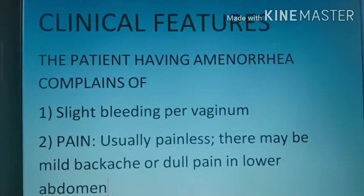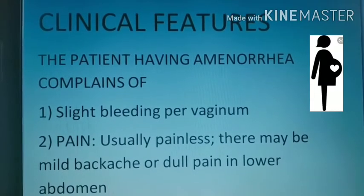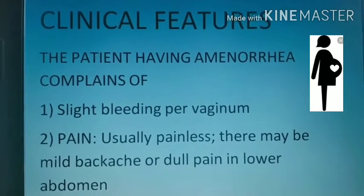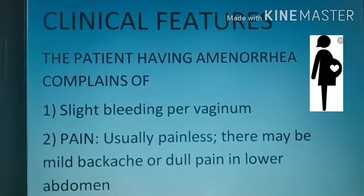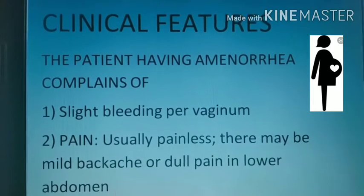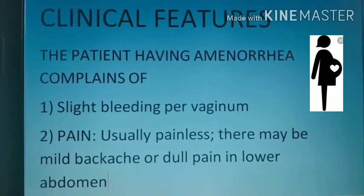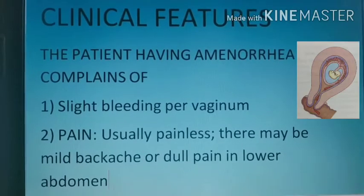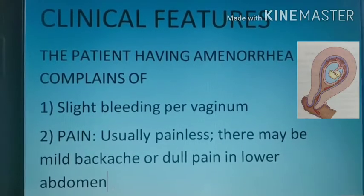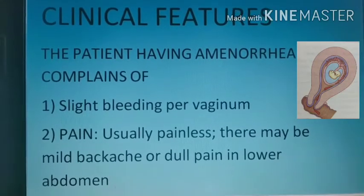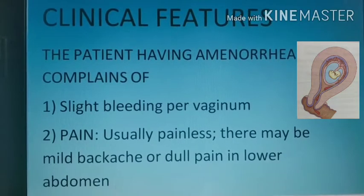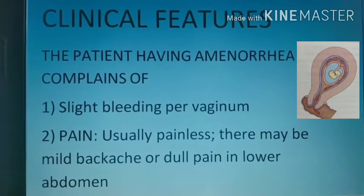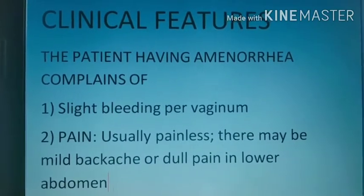Next is clinical features. A patient having amenorrhea — that is, a lady showing symptoms suggestive of pregnancy — in threatened miscarriage will show the following signs and symptoms. The first one is slight bleeding per vaginam. The second is pain. Bleeding is usually painless, but there might be mild backache or dull pain in the lower abdomen.